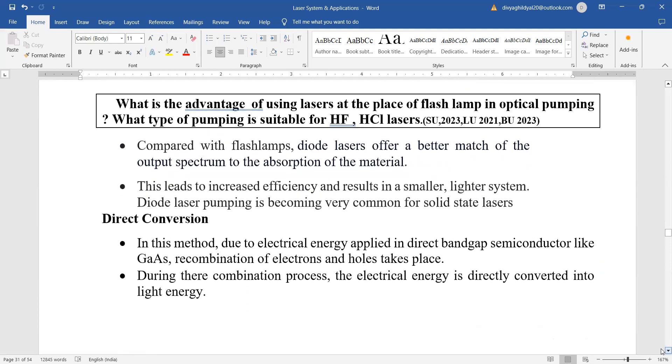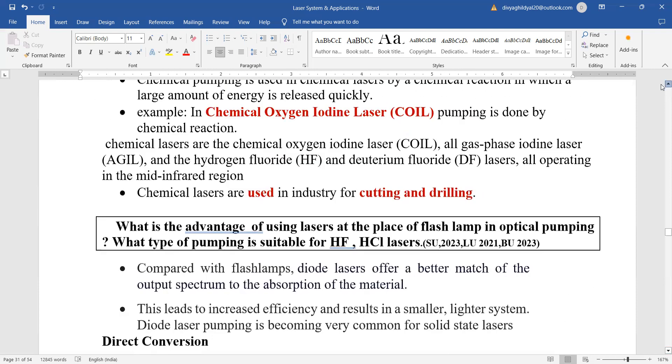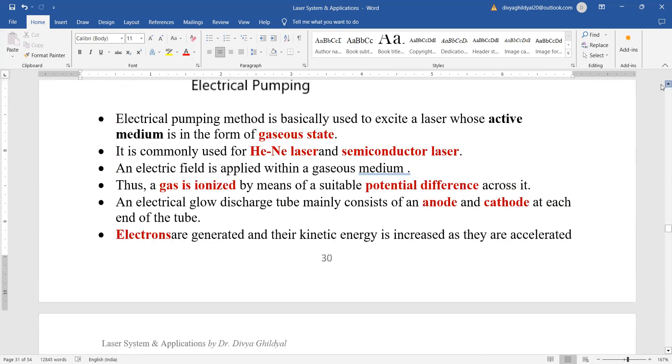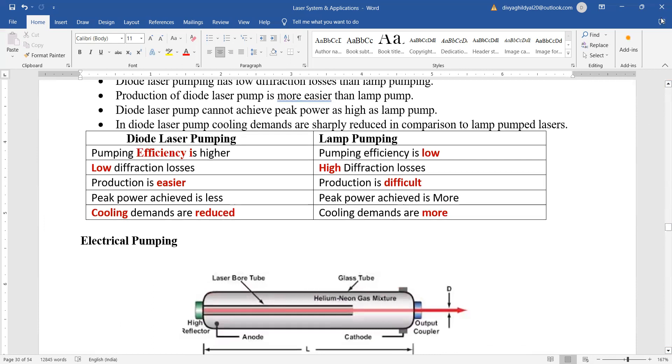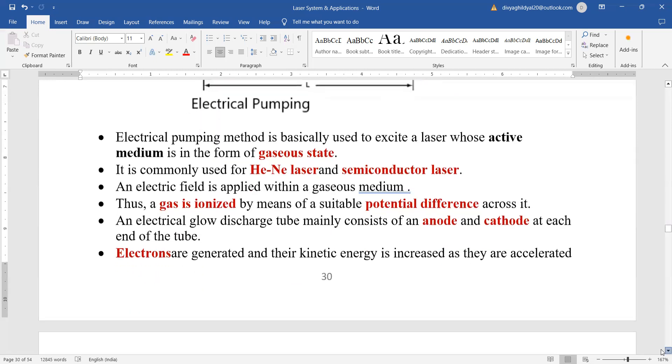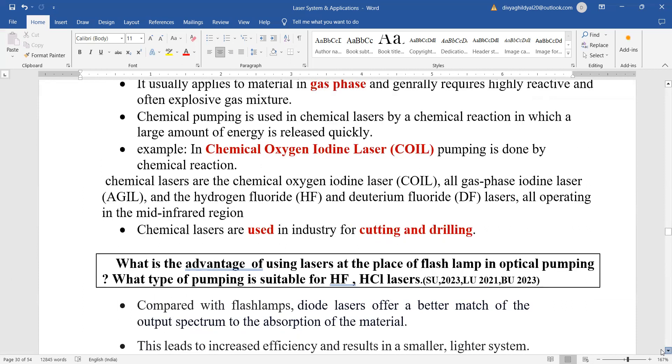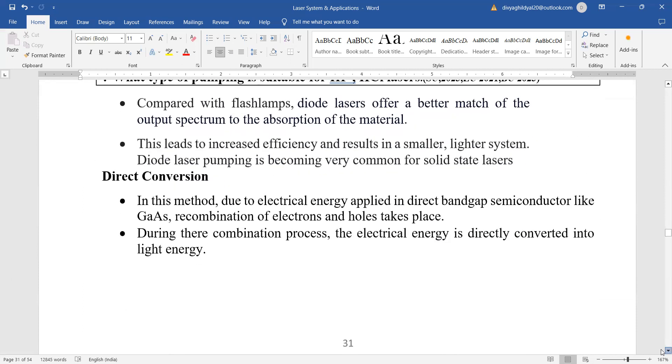A very common question asked in many exams is what is the advantage of using lasers at the place of flash lamp in optical pumping and what type of pumping is suitable for hydrogen fluoride and hydrogen chloride lasers. Compared with flash lamp, diode lasers are offering a better match to the output spectrum. We have discussed in detail with the chart where we have compared the advantages and this leads to increased efficiency and results in the smaller lightening system. We have done this comparison in the previous lecture where we compared diode laser and lamp pumping laser and their advantages. The associated question is what type of laser is suitable for hydrogen fluoride. It will be the chemical laser.